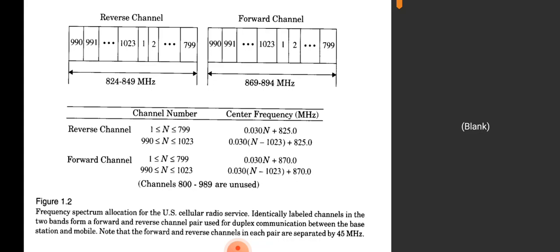The frequency spectrum allocation for US cellular radio systems uses identically labeled channels in two band form — a forward and reverse channel pair used for duplex communication between the base station and mobile. The base station is a primary source to which several mobile stations are connected. Several base stations are connected to one mobile switching center, and several mobile switching centers are connected to the public switched telephone network.